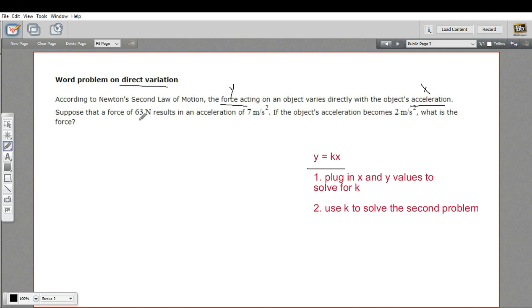So it says suppose that a force, that's our y again, of 63 newtons results in acceleration of seven meters per second squared. If the object's acceleration becomes two meters per second squared, what is the force?